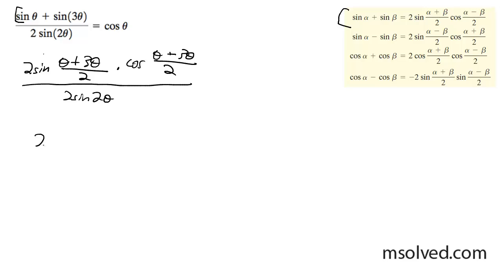Over 2 sine 2 theta. So what this becomes on the bottom: 2 sine theta divided by 2, cosine negative 2 theta divided by 2, over 2 sine 2 theta.